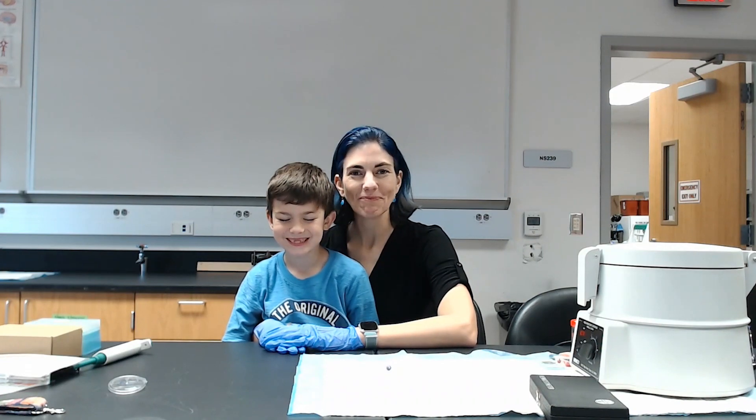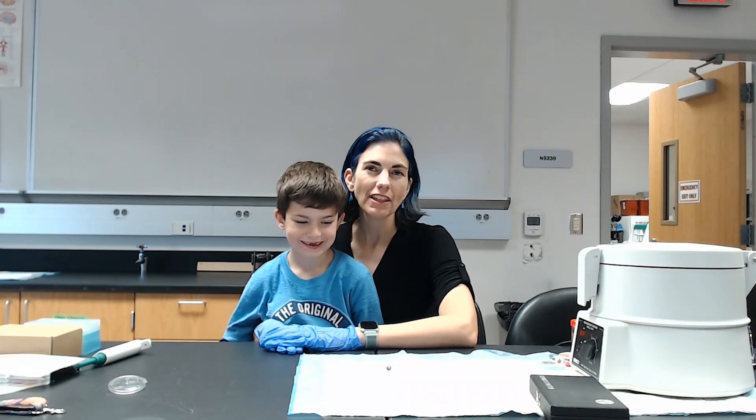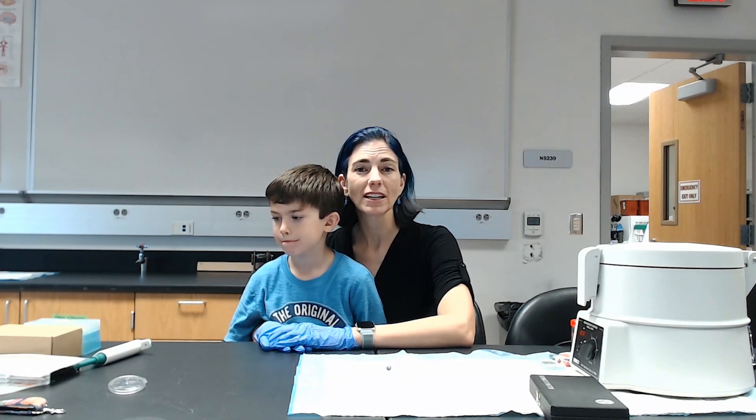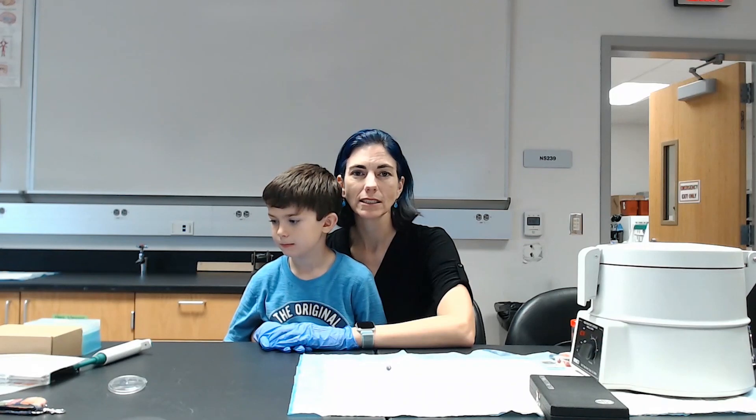White blood cells comprise the immune system. The typical white blood cell count is somewhere between 4,000 and 11,000 white blood cells per microliter or per millimeter cubed. When you get deviations from that, it indicates something is wrong. If your white blood cell counts are significantly below 4,000, that suggests that you're immunosuppressed for some reason.